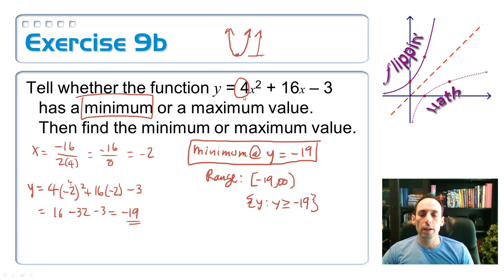So on this one, my a value is 4, which is positive. So this means we have ourselves a beard - parabola opens upwards, and we have a minimum value on our parabola. So that's what we're looking for. We find the x-coordinate of the vertex: -b/(2a), so -16 / (2 × 4), and it all simplifies down to -2.